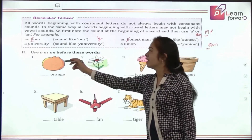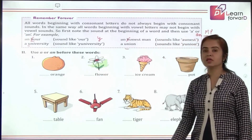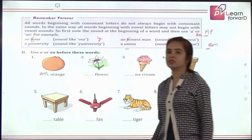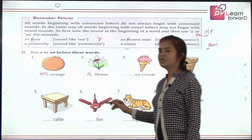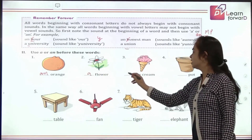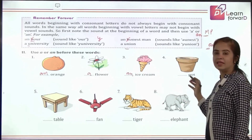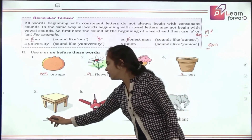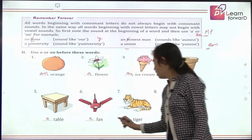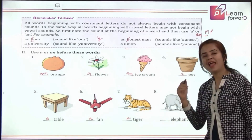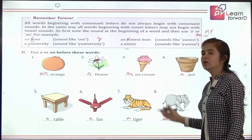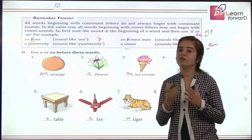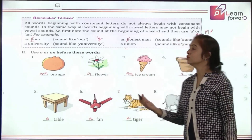Here is an exercise — use A or AN before these words, focusing on the sound. An orange. A flower. An ice cream. A pot or planter. A table. A fan. A tiger. And an elephant. So just keep in mind they are singular nouns and we have to think about the vowel sound and the consonant sound.